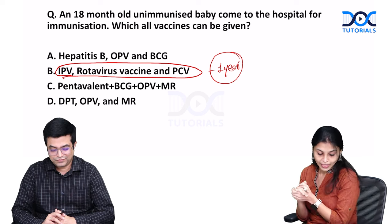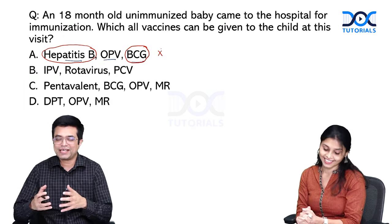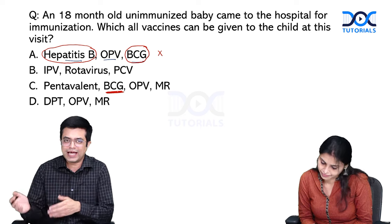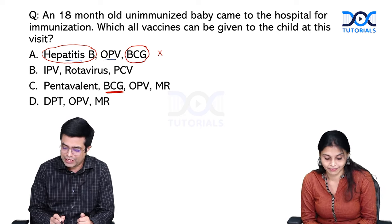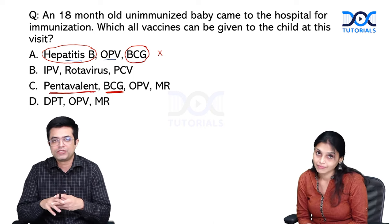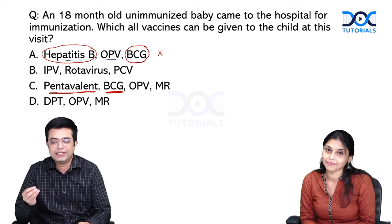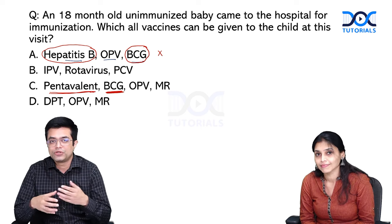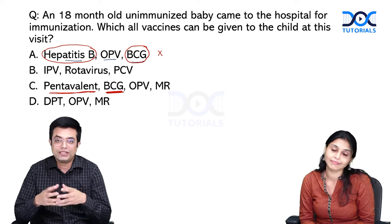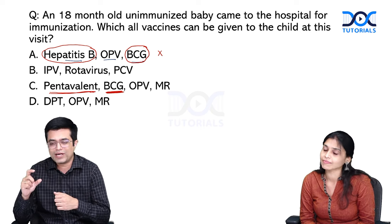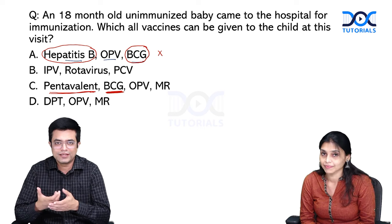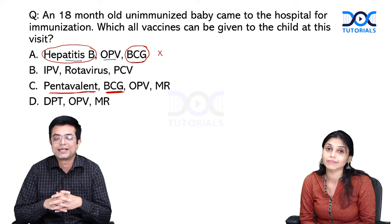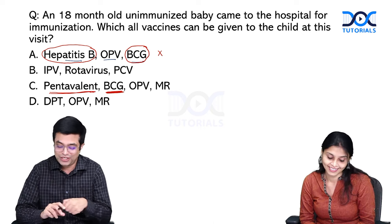Moving to option C - by this time you would already know it is not the correct answer because BCG is mentioned. OPV and MR can be given beyond one year, but BCG cannot, and neither can pentavalent. Pentavalent protects against five diseases: diphtheria, pertussis, tetanus, haemophilus influenzae type B, and hepatitis B. It comes as a pre-prepared liquid form with about 10 doses per pack. According to guidelines, pentavalent cannot be given beyond one year, so option C is also not the answer.